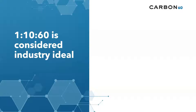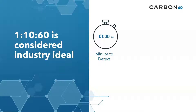The first pillar is one minute to detect. When an intruder compromises your network, time is of the essence. If you're unable to prevent the intruder from gaining access and they do get onto your network or onto an endpoint, you have to be able to detect that intrusion as quickly as possible.